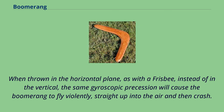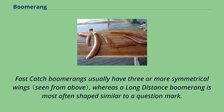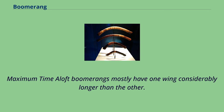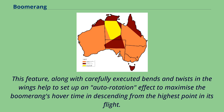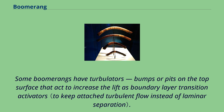When thrown in the horizontal plane, as with a frisbee, instead of in the vertical, gyroscopic precession will cause the boomerang to fly violently straight up into the air and then crash. Fast-catch boomerangs usually have three or more symmetrical wings, whereas a long-distance boomerang is most often shaped similar to a question mark. Maximum time aloft boomerangs mostly have one wing considerably longer than the other. This feature, along with carefully executed bends and twists in the wings, helps set up an auto-rotation effect to maximize hover time when descending from the highest point in flight. Some boomerangs have turbulators — bumps or pits on the top surface that act to increase lift as boundary layer transition activators.